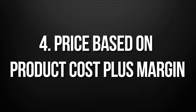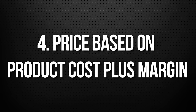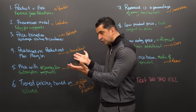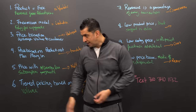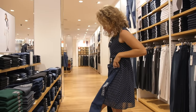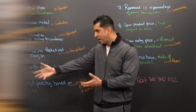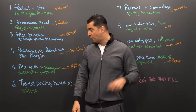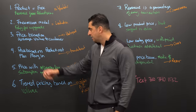The fourth model is price based on product cost plus margin. This is traditional. You buy these pants for $20, you sell them for $30. You buy whatever product you've got for $15, you sell it for $40.